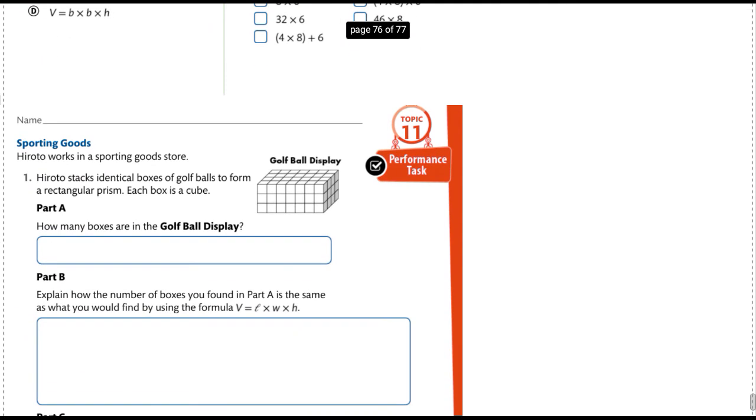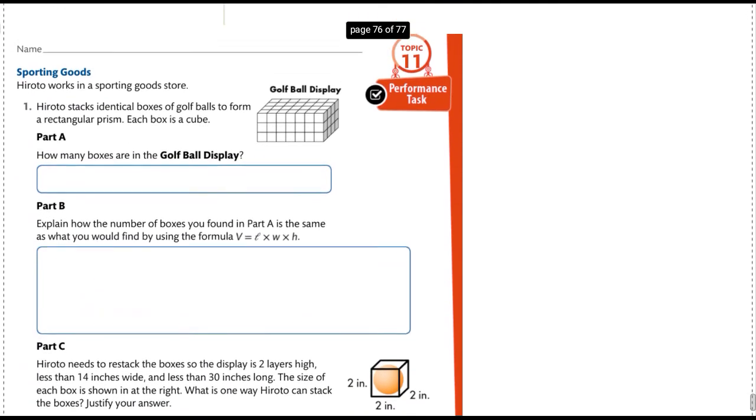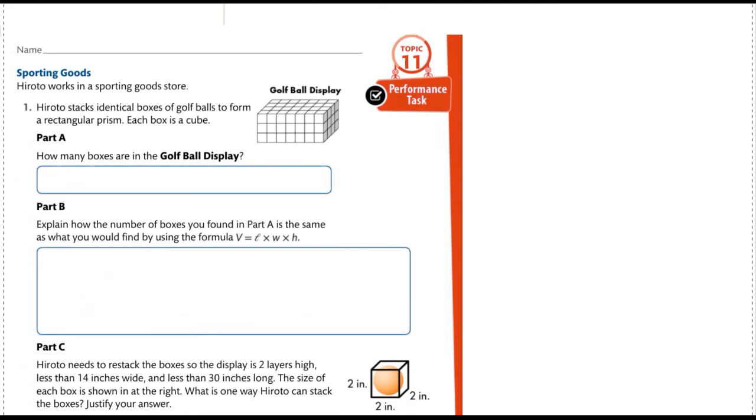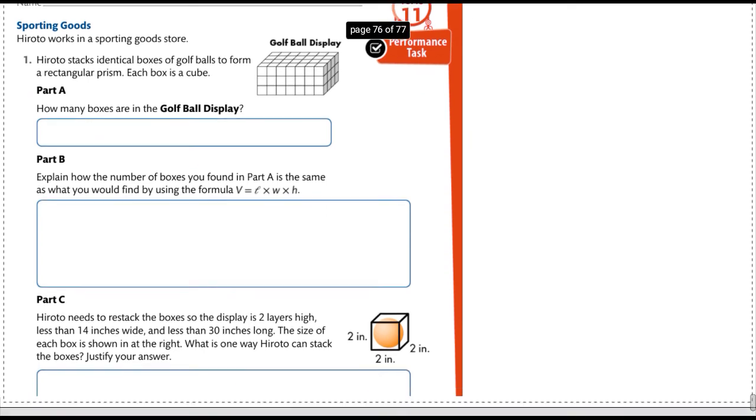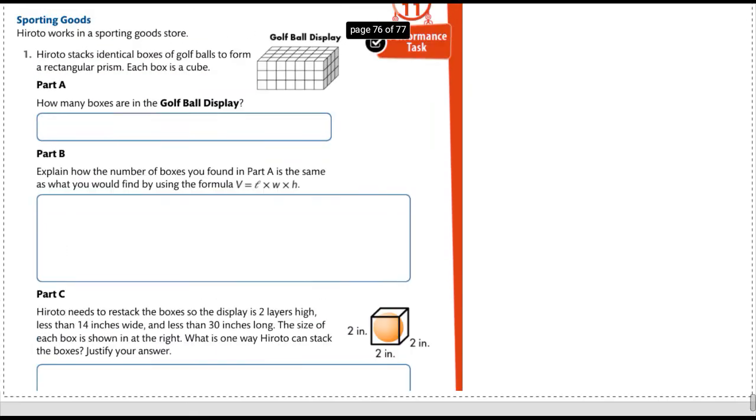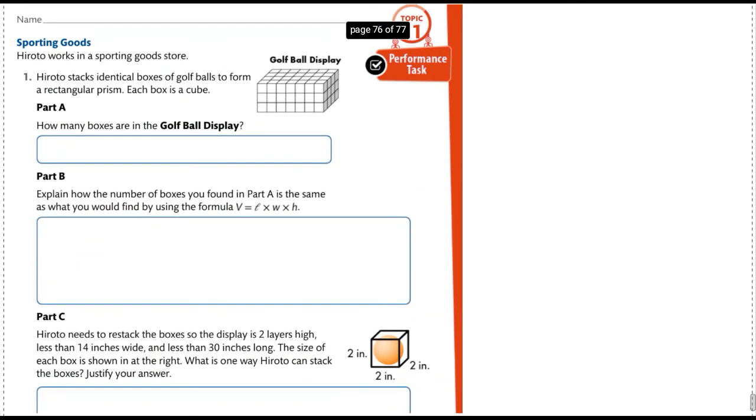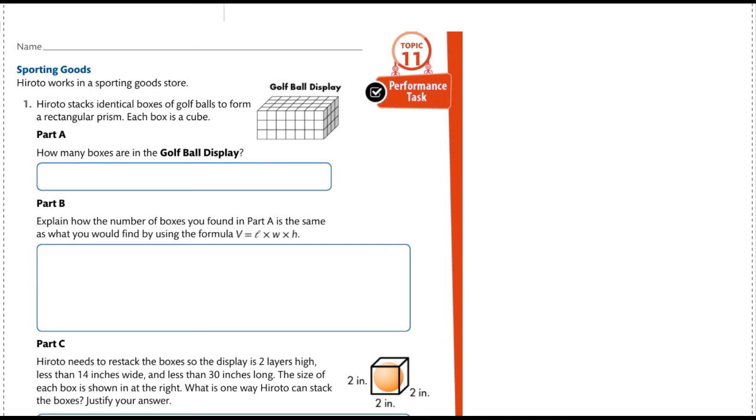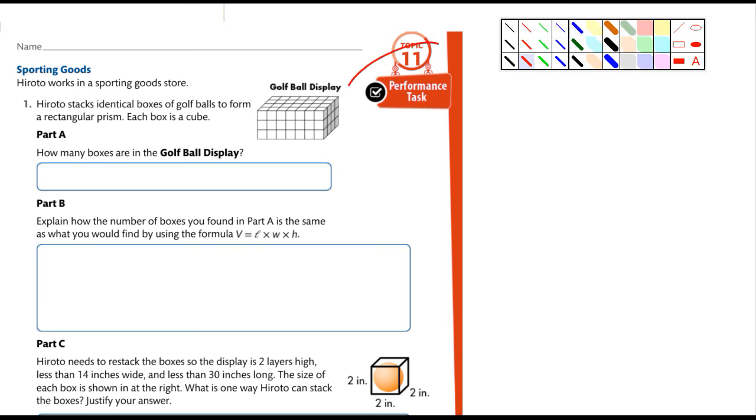Then they have a performance task. And I want you guys to try this. I cut it off, I'm not sure what page it's on, but it's the very first part of the performance task that I'd like you to try. And part B explained how the number of boxes you used found in part A is the same as what you would find by using the formula.